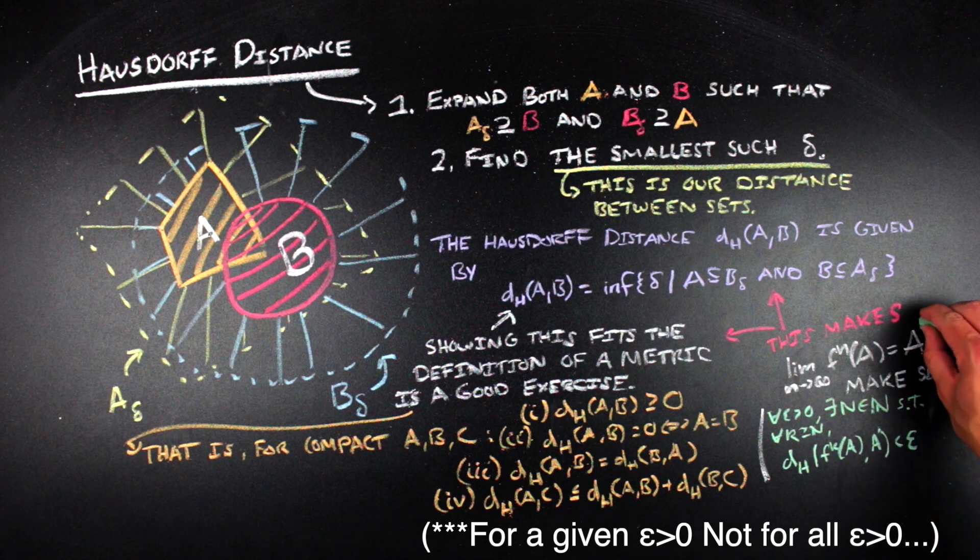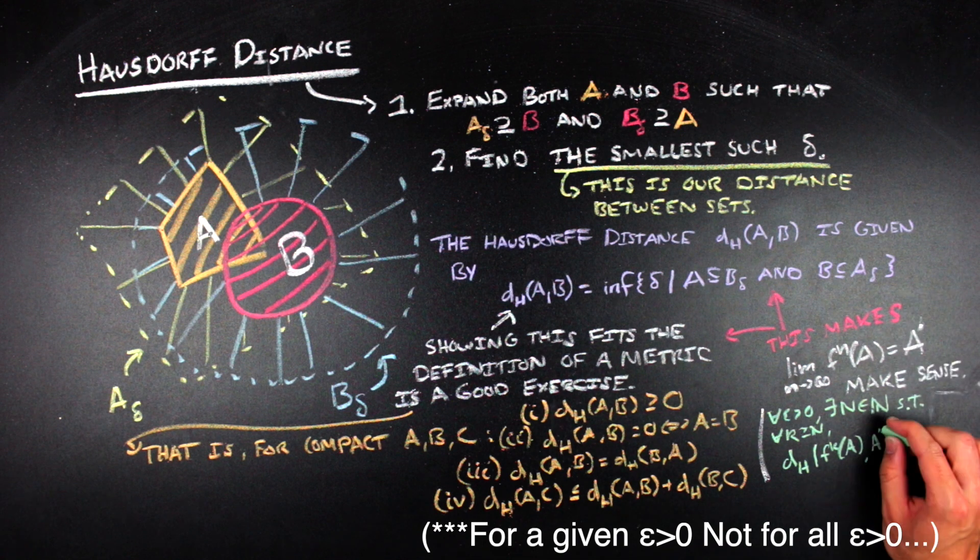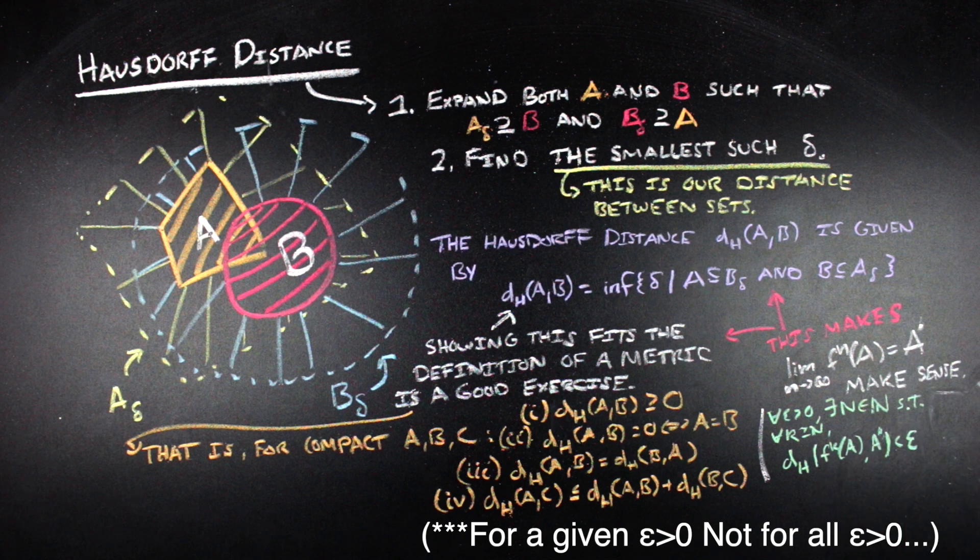And so, essentially what that means is that we can make the distance between these sets as small as we want as long as we just apply the functions so many times. And this is exactly the type of process that allows us to define things like Sierpinski's carpet or Barnsley's fern without any mathematical ambiguity because we can say that these types of sets are attractors of some process.